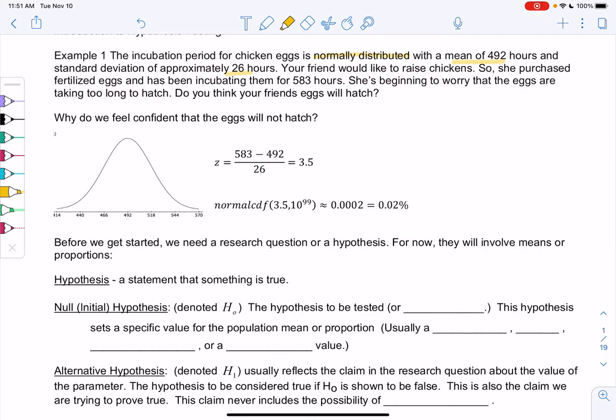Your friend wants to raise some chickens, so she purchased some fertilized eggs and has been incubating them for 583 hours. She's beginning to worry that her eggs are taking too long to hatch. Do you think your friend's eggs will hatch? Why am I confident that they won't hatch?